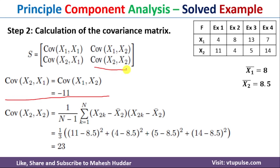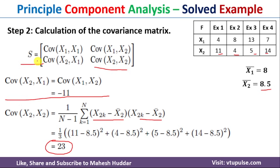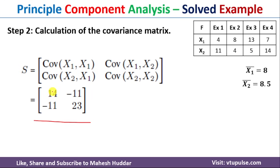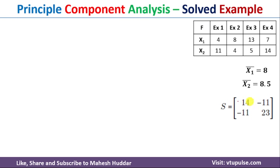Similarly, the covariance of x2,x2 equals 1 divided by n minus 1, summed over k, of (x2k minus x2-bar) squared. x2k values are x21, x22, x23, x24 and x2-bar is 8.5 in all cases. Solving gives 23. Putting all four values together, the covariance matrix is [14, -11; -11, 23]. This completes the second step.